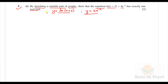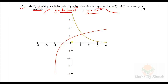When we draw them together, they will meet at only one point, which shows exactly one real root. Here's the graph of y = ln(x+2) and the graph of y = 4e^(-x). Since it is 4e^(-x), when x = 0, y = 4, so it intersects the y-axis at 4.